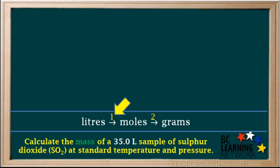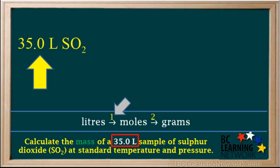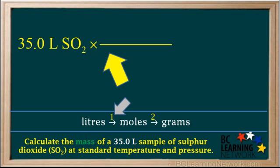In step one, we convert liters of SO2 into moles. We start by writing 35.0 liters of SO2. Next, we add a conversion factor which we can use to convert liters to moles. The unit we have is liters of SO2, so we want to cancel it, so we write it on the bottom of our conversion factor.